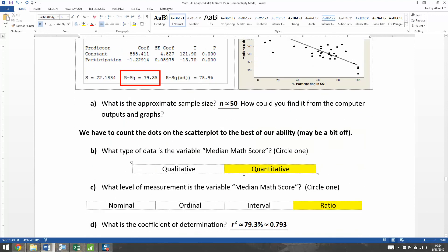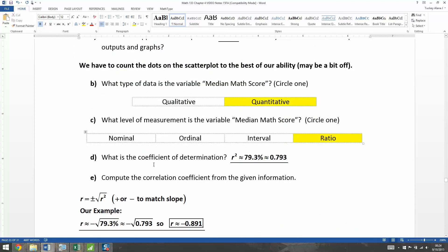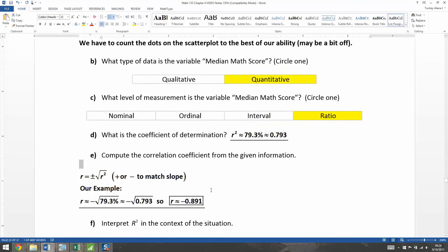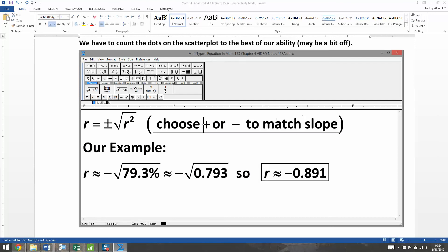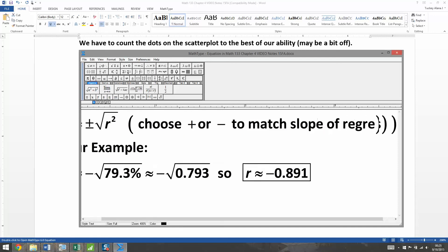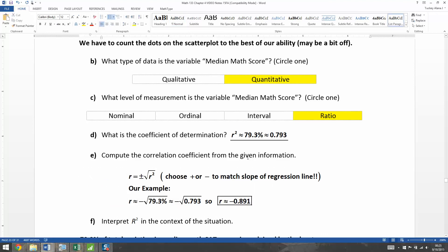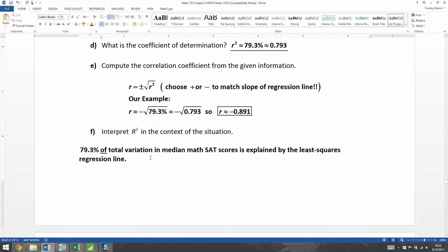All right. We are all done with that example. So we have seen, first of all, a little review of quantitative and qualitative and how to count the dots. But then we also saw how to read for the coefficient of determination right there, and then how to use that very tricky to find your correlation coefficient. And remember, you have to pick the sign. I just can't stress this enough. Choose plus or minus to match the slope of the line. Right? So you have to choose your own plus or minus depending on the situation.